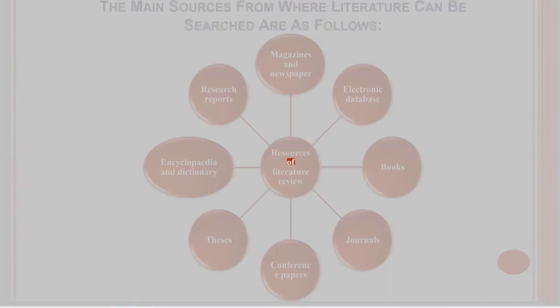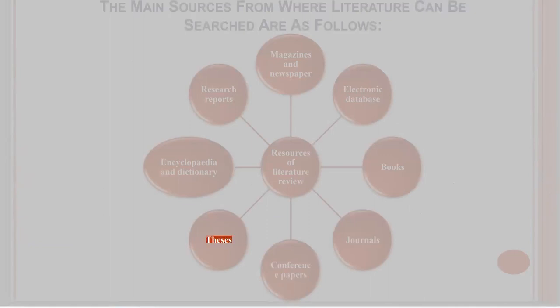Resources of literature review. The main sources from where literature can be searched include: magazines and newspapers, electronic databases, books, journals, conference papers, theses, encyclopedias and dictionaries, research reports, and other sources.